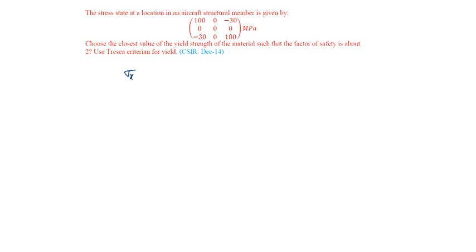Given sigma x is 100, sigma y is 0 and sigma z is 180 megapascals, tau xz is minus 30 megapascals.